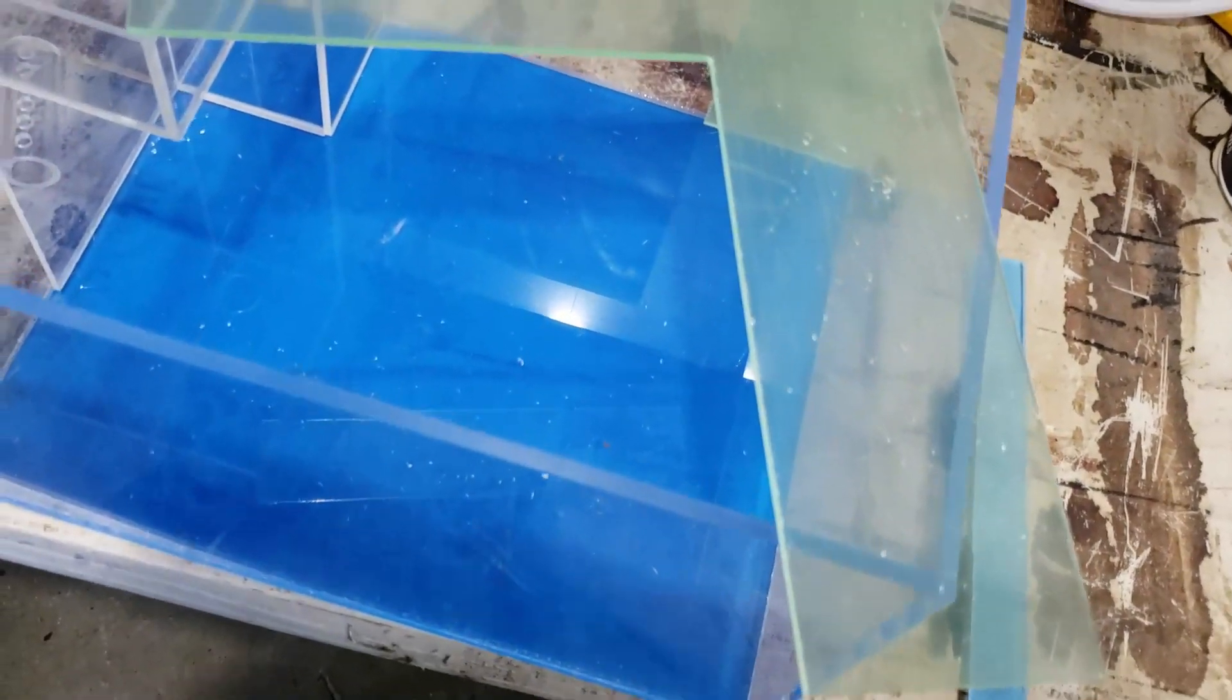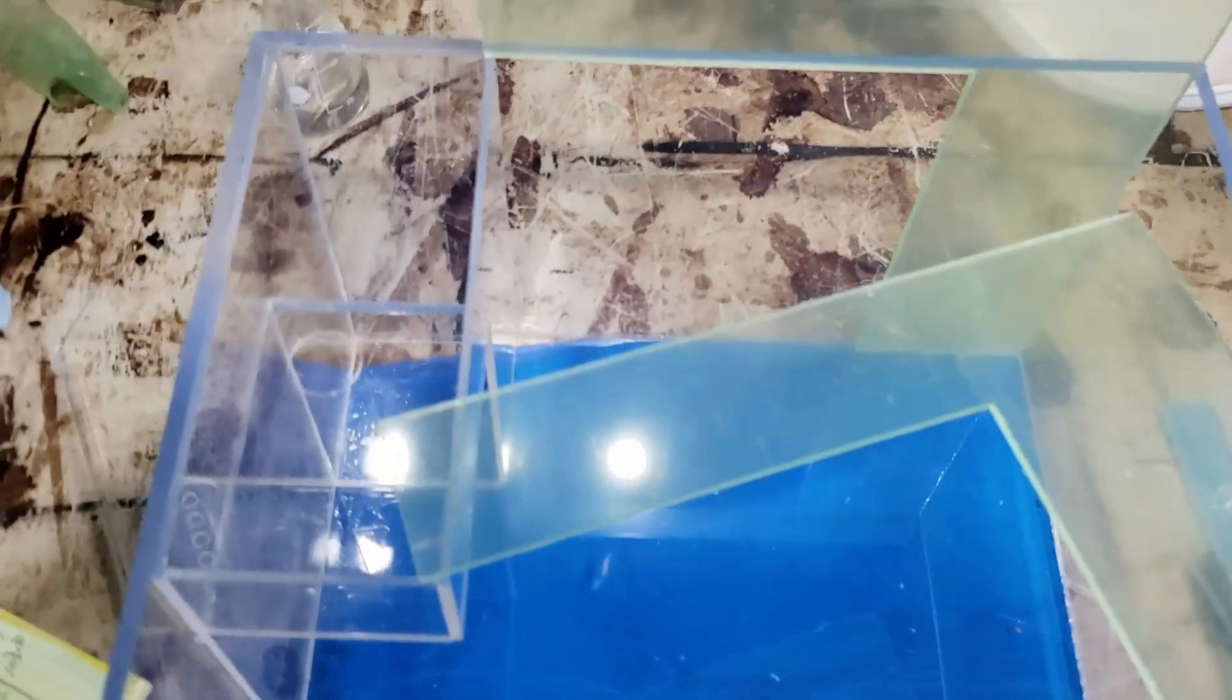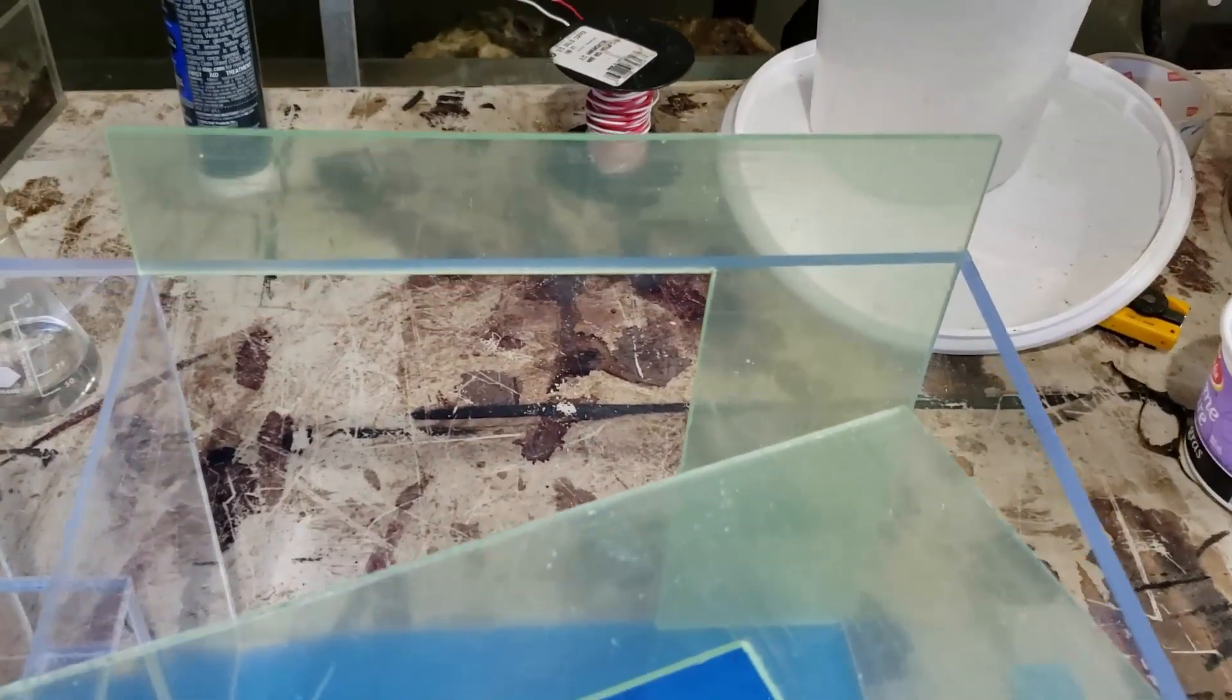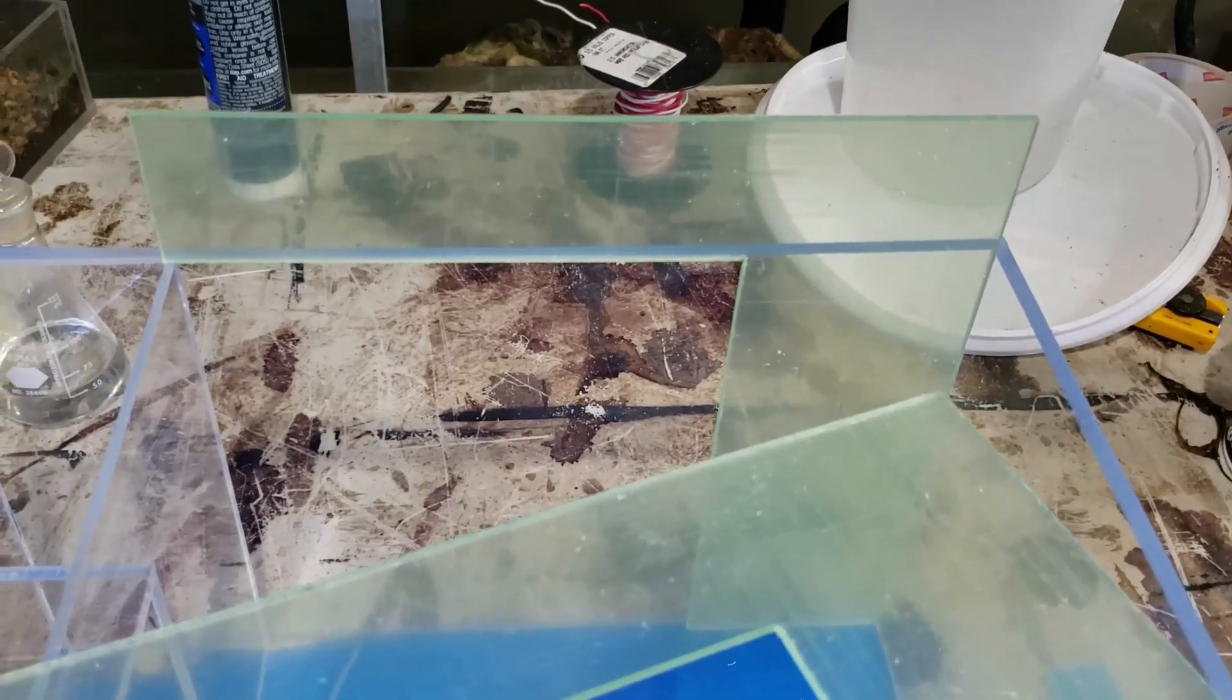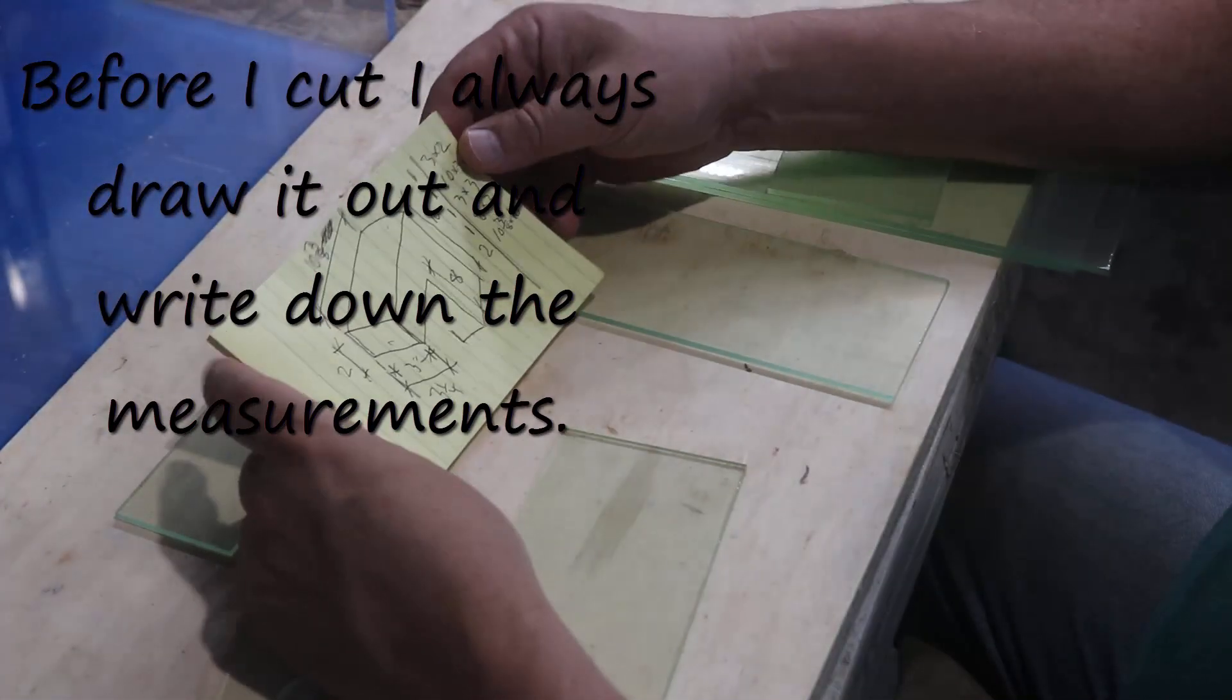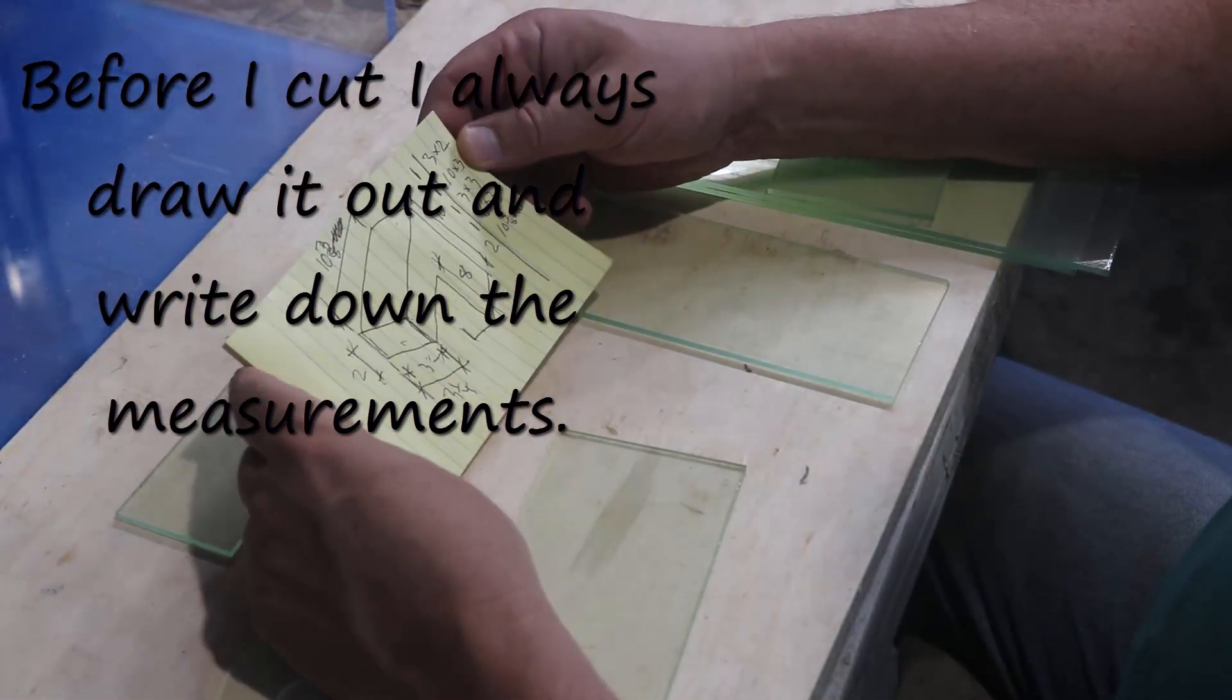So this is gonna be the two pieces. These are the two ends or the two sides depending on how you want to look at it. This is going to be the next lift. So water is gonna be pumped into the first chamber and then pumped up into the second one.